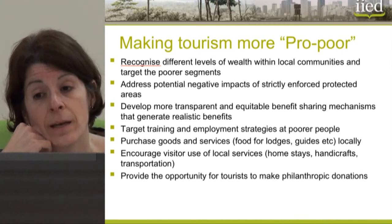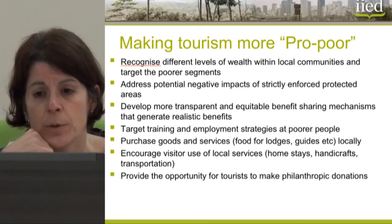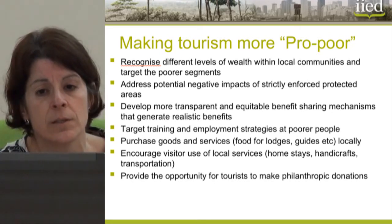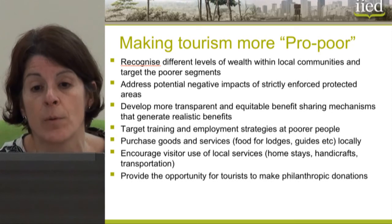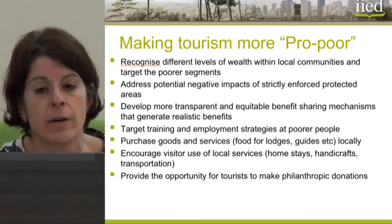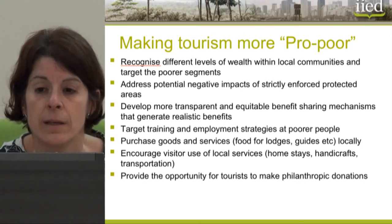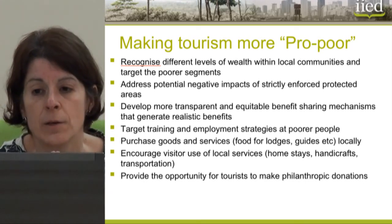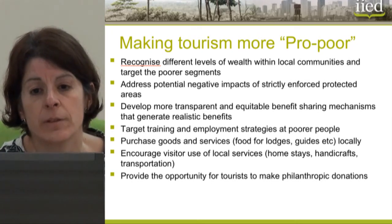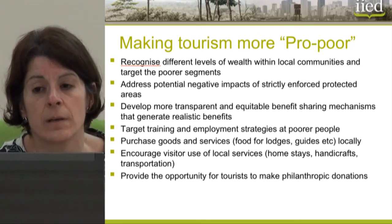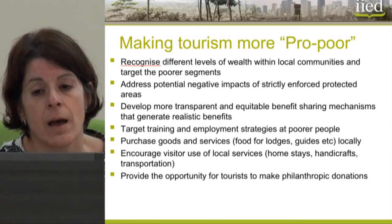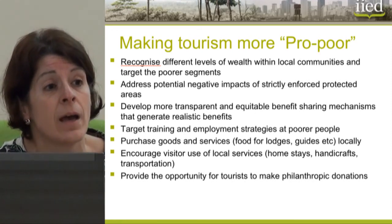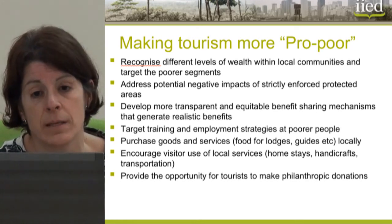There are many ways in which tourism can be made more pro-poor, and many things that tourism organisations — whether NGOs, tourism ministries, protected areas, or others — can do to increase their impact on poor people. The first strategy is to recognise that people who live in and around tourism areas are not homogenous; there are huge differences in levels of wealth, and if you want to make a poverty impact you need to target benefits at the poorest. Development experience shows that targeting women and children really does make a difference.